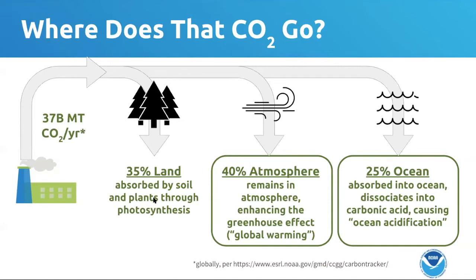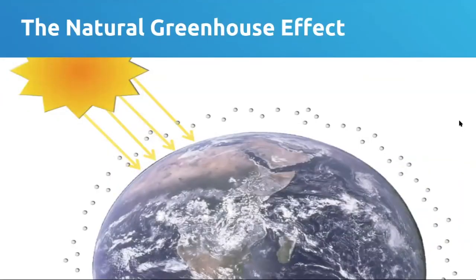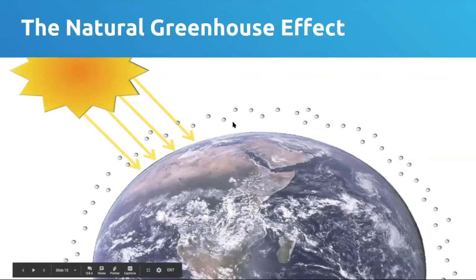Some of it is taken up by plants that are photosynthesizing and using carbon dioxide to make sugars. A significant portion is also absorbed into the ocean — CO2 gas dissolves easily in water, which is why we make carbonated sodas using CO2. But this has negative effects because it can change the chemistry of the oceans and actually make the oceans more acidic. We care about all of this CO2 because carbon dioxide is a really effective greenhouse gas.